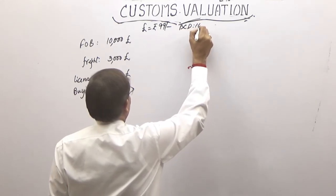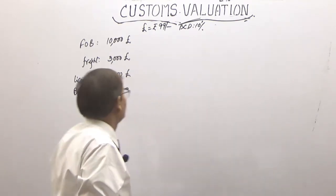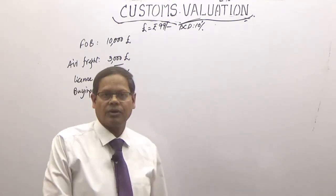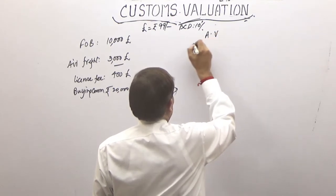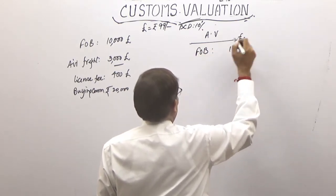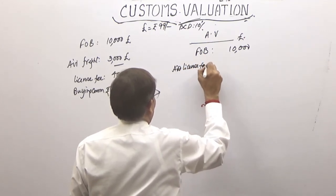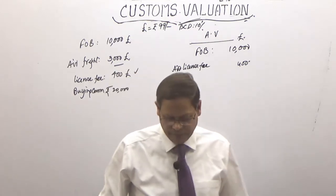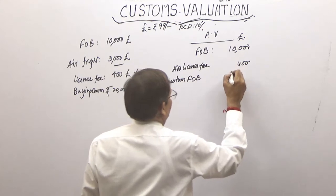The freight is £3,000 by air — that is the catch. They have given FOB value directly, so the computation is straightforward. For assessable value: take FOB of £10,000, add license fee of £400, giving customs FOB of £10,400.